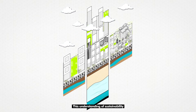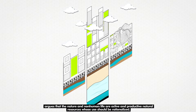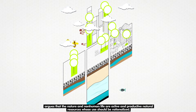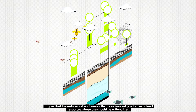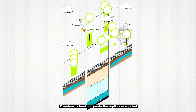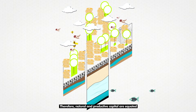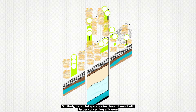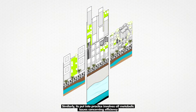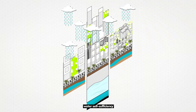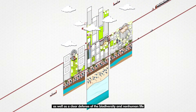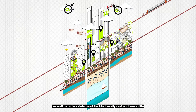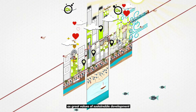This understanding of sustainability, unlike the traditional, argues that nature and non-human life are active and productive natural resources whose use should be rationalised. Therefore, natural and productive capital are equated. Its practice involves all metabolic issues concerning efficiency and energy, water self-sufficiency and water management, as well as a clear defence of biodiversity and non-human life as great values of sustainable development.